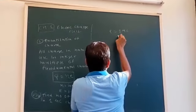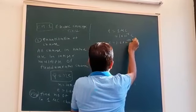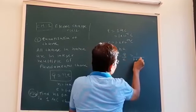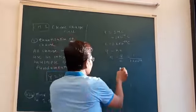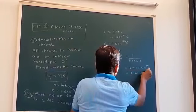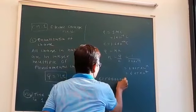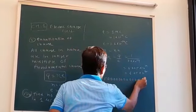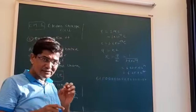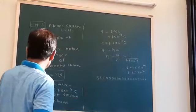Q is equal to 1 microcoulomb, which is 1 × 10⁻⁶ Coulomb. E is the charge of the electron. From Q = nE, we get n = Q/E = 1 × 10⁻⁶ / 1.6 × 10⁻¹⁹, which gives 0.625 × 10¹³. Since n must be an integer, this suggests that all charges in nature are integer multiples of the fundamental charge. This is how we show the quantization of charge.